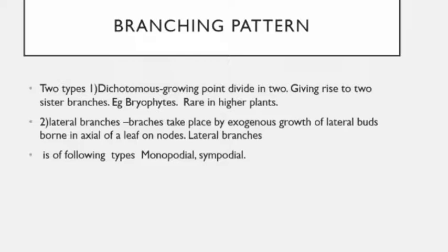Branching pattern: in angiospermic plants, the stem remains unbranched usually in monocots and bears a crown of leaves at its apex — example is coconut, palm, sugarcane, and maize. In gymnosperms and dicotyledonous angiosperms, the stem is profusely branched. Branching is of two types: dichotomous and lateral. Dichotomy means the growing point divides into two parts giving rise to two sister branches; it is common in bryophytes.